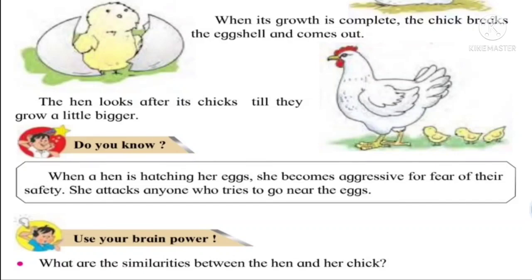Now there is a question for you: what are the similarities between the hen and her chick? There are many similarities — they look the same, they eat the same food, they feed on insects and greens, and some body parts are also the same. Though the chick looks small, when it grows up it is completely similar to its mother.